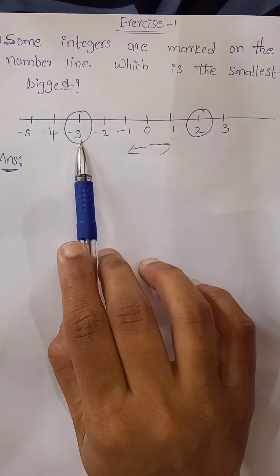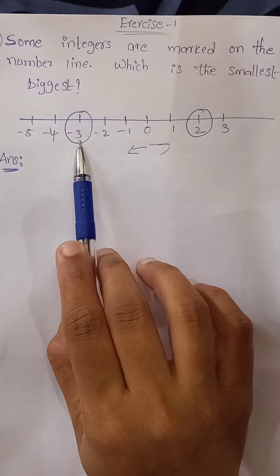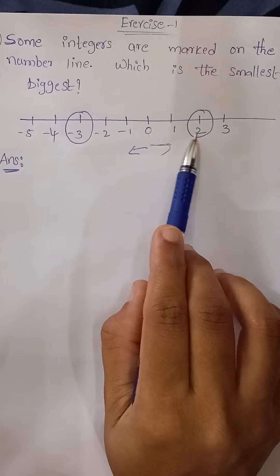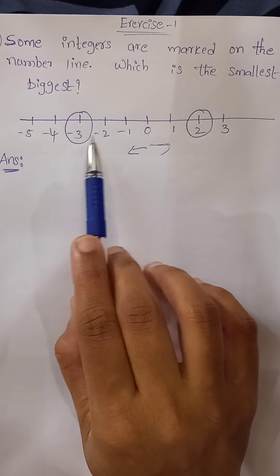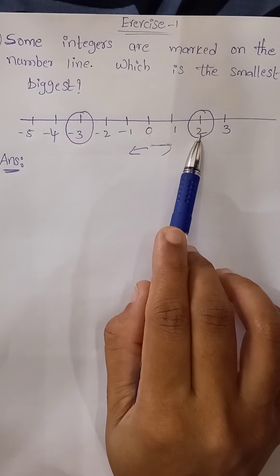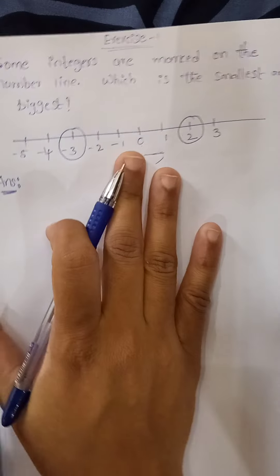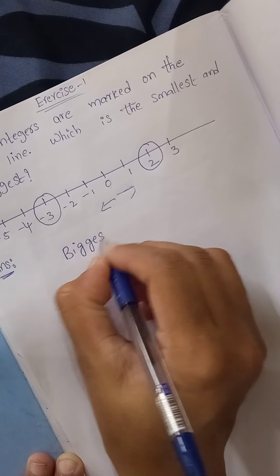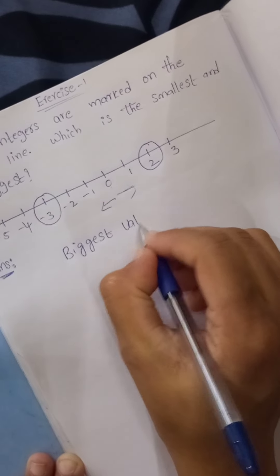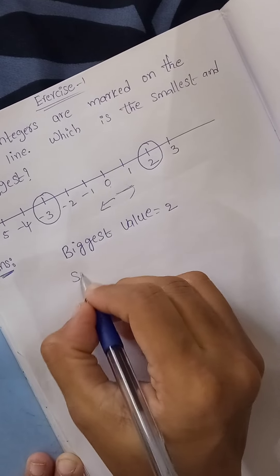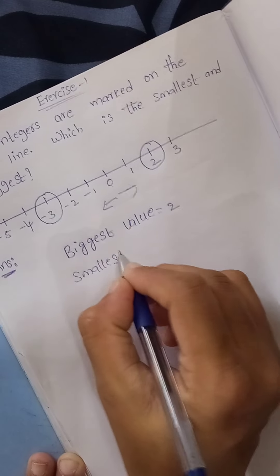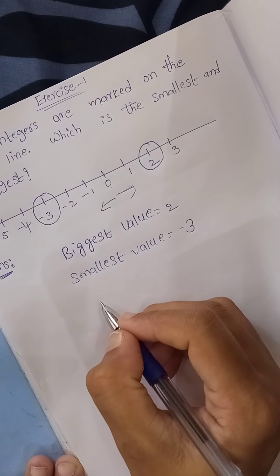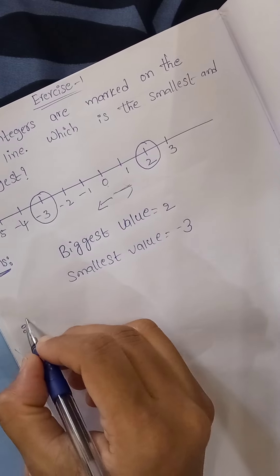We can also say that 2 is on the right side of minus 3 on the number line, and always the number on the right side is greater. So the biggest value is 2 and the smallest value is minus 3. Let's see what the next question is.